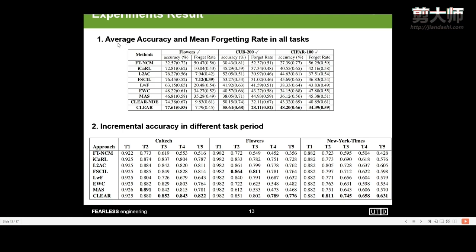In this table, we first show the average accuracy and the forgetting rate on all the tasks. We could see that most of the time, our approach could beat other competitors on not only the accuracy, but also the forgetting rate performance with a clear margin. Next, for the incremental accuracy on different task periods, our approach could also reach the highest performance on different tasks, from task one to task five in the CUB-200 dataset, the Flowers, and the New York Times dataset.